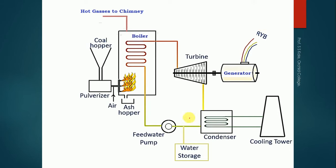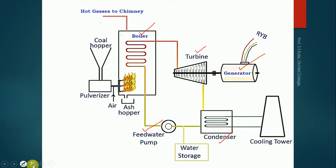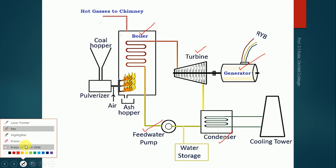In the thermal power plant, there are four to five main components. The first component is the boiler, the second is the turbine, the third is the generator, the fourth is the condenser, and the fifth is the feed water pump. These are the major components, and by combination of all these we are going to generate electricity.